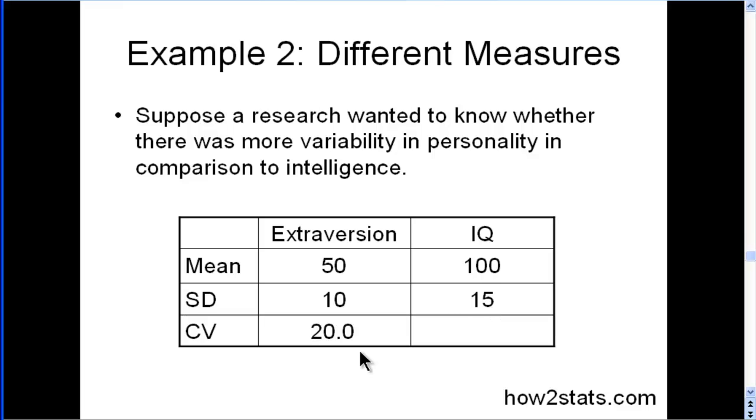Well, we get the coefficient of variation. In this case, it's 20%, and in this case, 15. So, these results suggest that there's more variability in extraversion than there is in IQ.